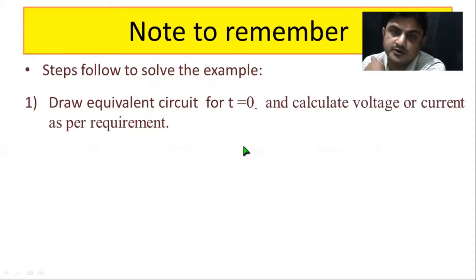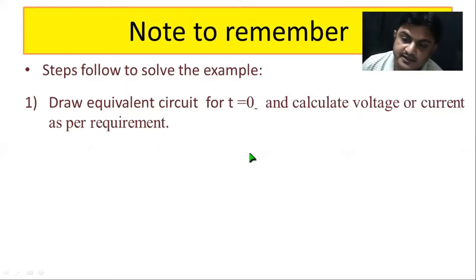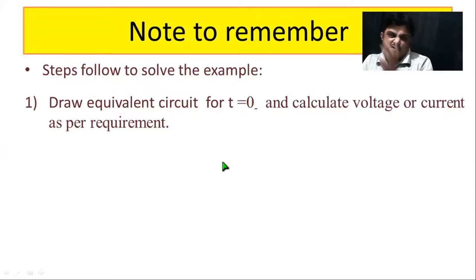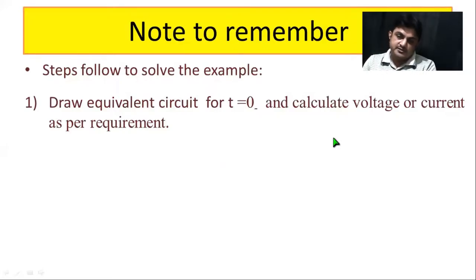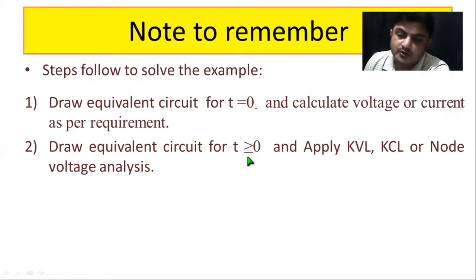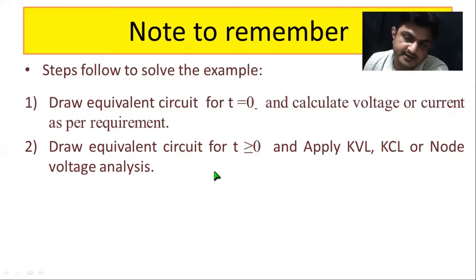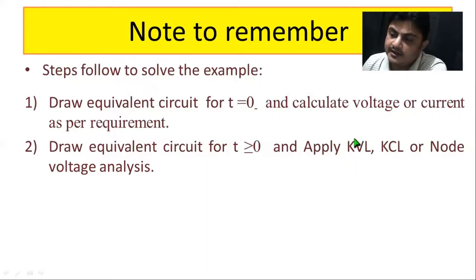The first step is to draw the equivalent circuit for t = 0 minus — just before the switching — and calculate the voltage and current as required. If you need to calculate voltage, find the voltage across the capacitor or inductor; if current, find the current through the inductor just before switching. The second step is to draw the equivalent circuit for t = 0 and apply KVL or KCL or node voltage analysis. When calculating current for t > 0, we apply KVL; when calculating voltage, we apply KCL or node voltage analysis.